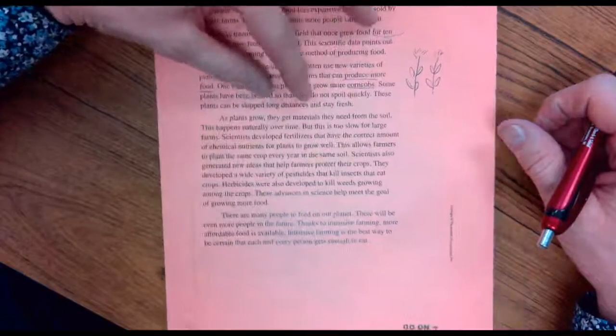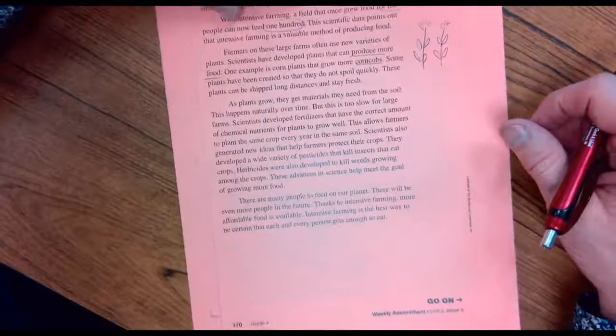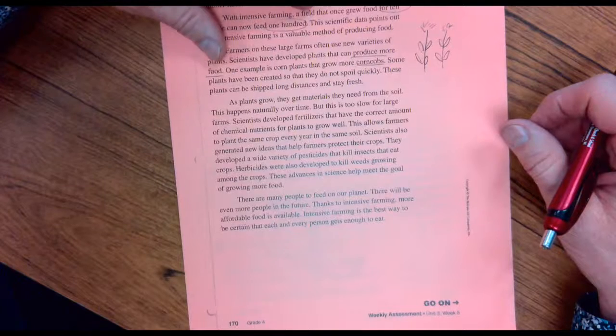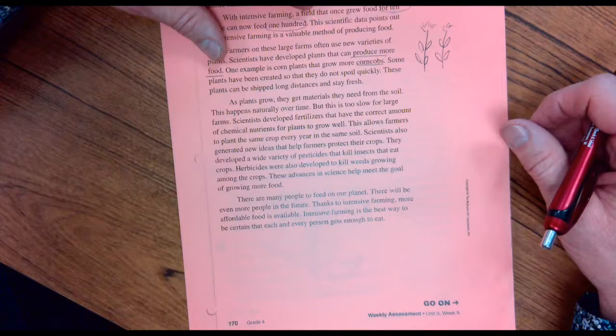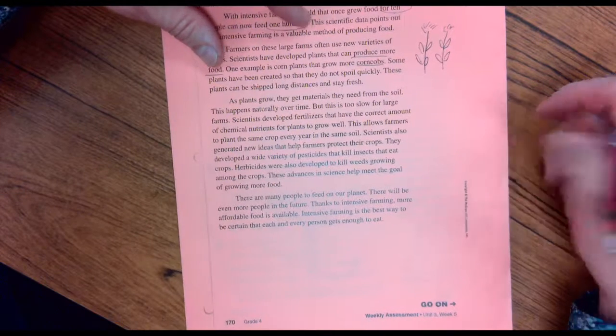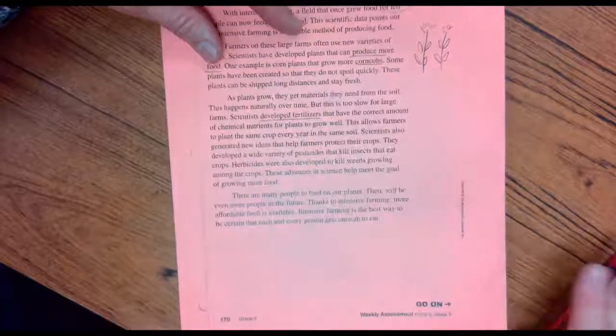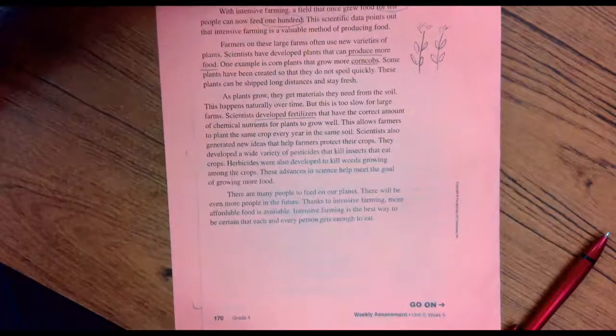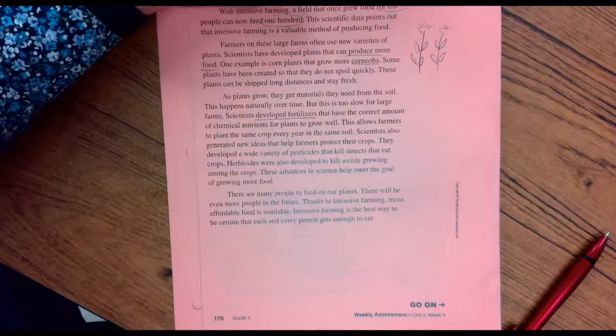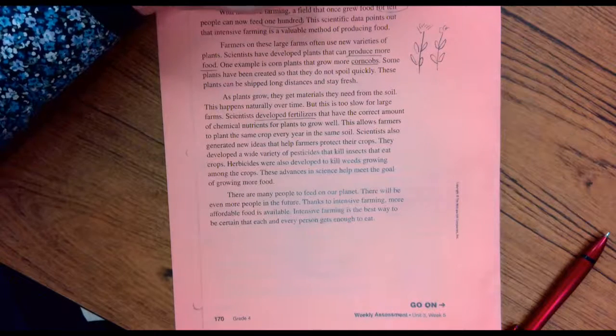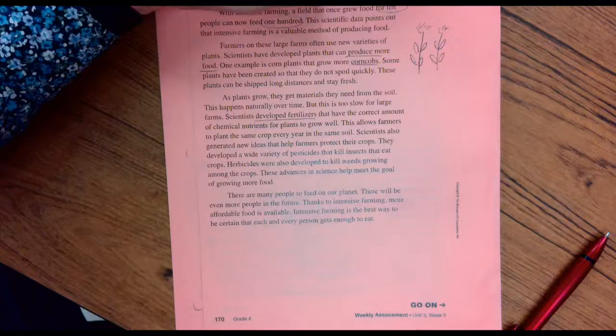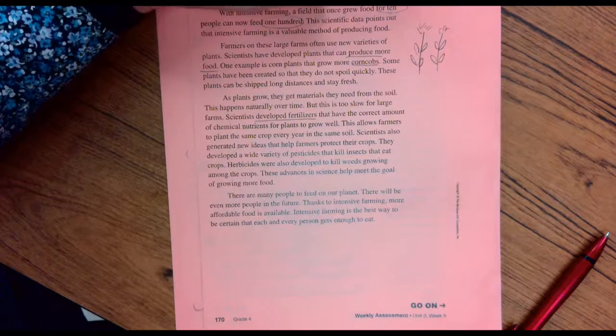As plants grow, they get materials they need from the soil. This happens naturally over time, but this is too slow for large farms. Scientists develop fertilizer that have the correct amount of chemical nutrients for plants to grow well.